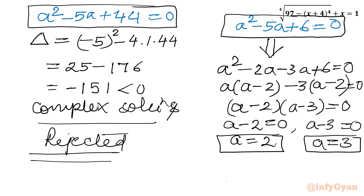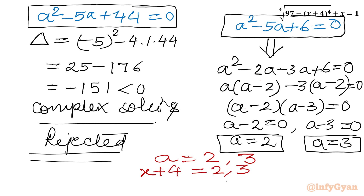Substituting back using x plus 4 equal to A: when A equals 2, x plus 4 equals 2 so x equals minus 2; when A equals 3, x plus 4 equals 3 so x equals minus 1. We are having real solutions x equals negative 2 and x equals negative 1.